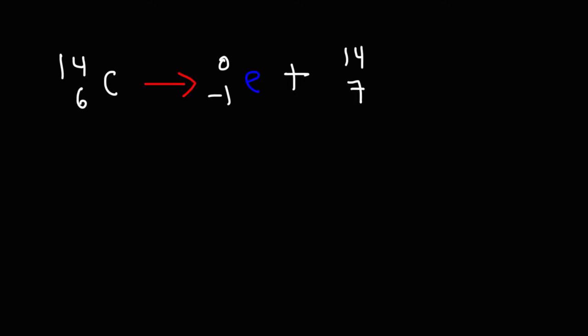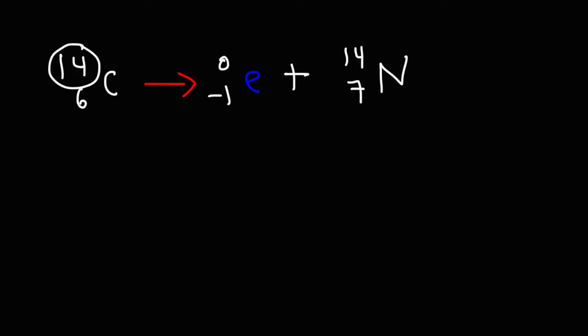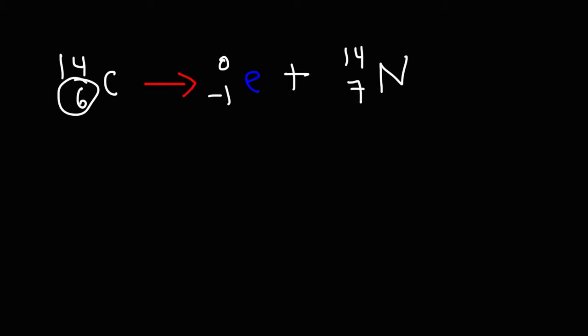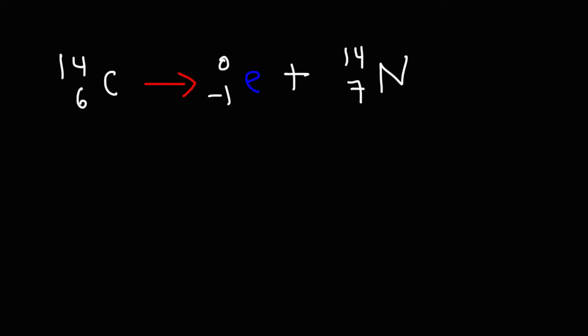Now that we've identified the missing atomic number, we need to identify the element using the periodic table. The mass numbers can vary for different elements, or even for the same element. However, the atomic number always identifies the element. Using the periodic table, the element with an atomic number of 7 is nitrogen. That's how you identify the missing element by looking at the atomic number. The equation is now balanced — the mass numbers are 14 on both sides, and the nuclear charge is 6 on both sides: negative 1 plus 7 equals 6.